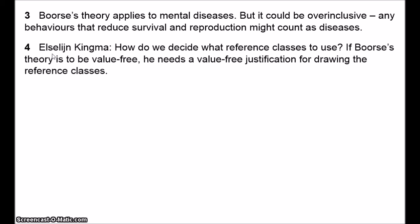The question is: why is it legitimate to use gender, age, and race as determining the reference classes, but not other traits like alcoholism? The basic worry is that in choosing which reference classes to use, Boorse is smuggling in value judgments. We use age, sex, and race as reference classes because those are considered perfectly normal variations. We don't use alcoholics as a reference class because alcoholism is considered undesirable. But Boorse's account of disease is supposed to be purely empirical and value-free, so we need an empirical, value-free justification for how we draw our reference classes.